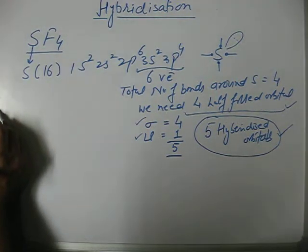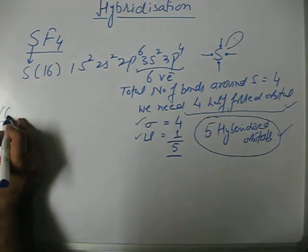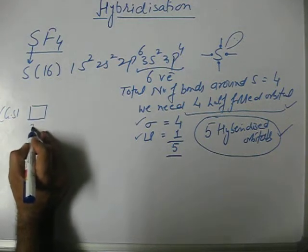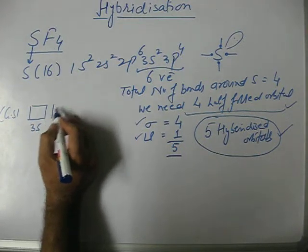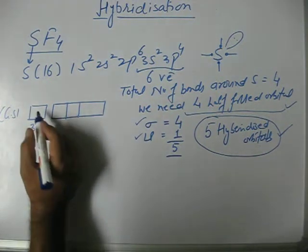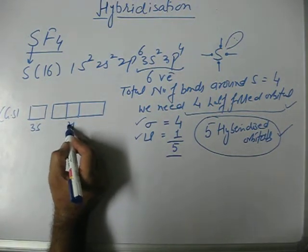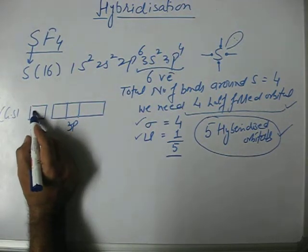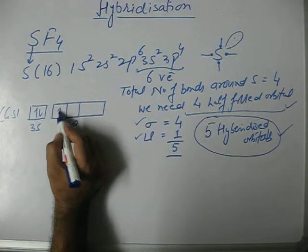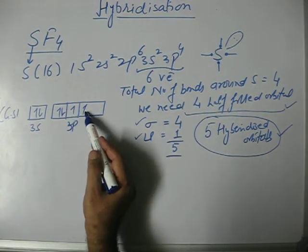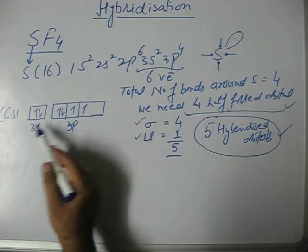Now we will look at the orbital representation in case of sulfur. Remember, if any atom has the required number of half-filled orbitals in the ground state itself, then there is no need of excitation. Remember, hybridization can also take place in the ground state. In the ground state we just have two half-filled orbitals in the valence shell of sulfur.